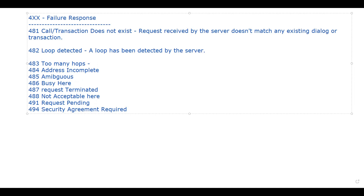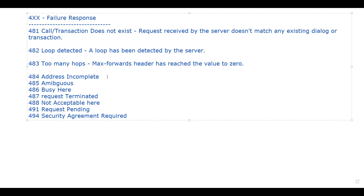Next we have 483 - Too Many Hops. As the name indicates, there are too many hops. In this case, the Max-Forwards header has reached the value of zero. Because the allowed number of hops specified in the Max-Forwards header field has been exhausted, you will get the 483 Too Many Hops message.